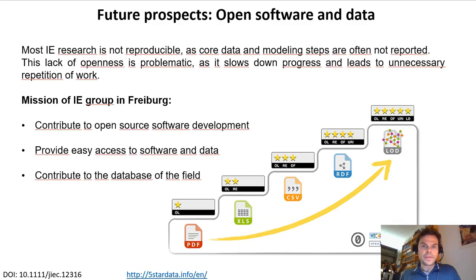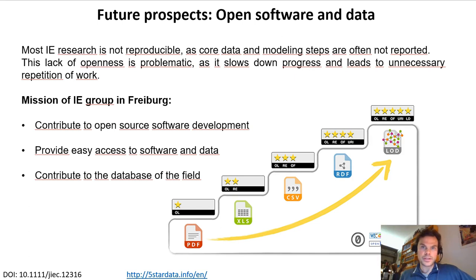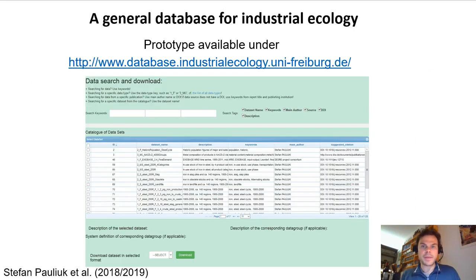There is a strong movement within the community towards open software and data. The main reason is that within industrial ecology, in many aspects, we have reached the limit of what we can do as individual researchers or small research teams. In the future, there will need to be more collaboration to tackle the pressing research questions of sustainable development, and collaboration across large teams — spanning different PhD student generations and continents — requires powerful infrastructure and access to information and tools.